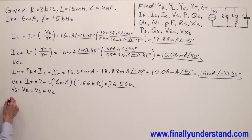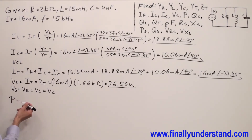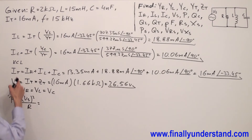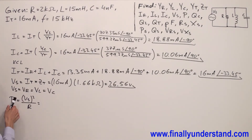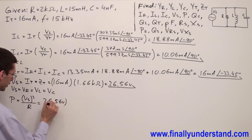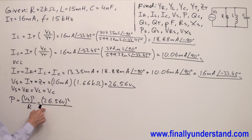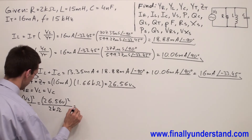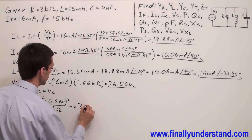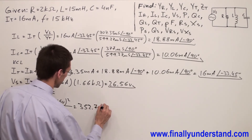Next we're supposed to find the true power. I assume that the given current is RMS, so the voltage I found is also RMS. Power is equal voltage source squared over the resistance. Because we have RMS values, we don't write one half in the formula. So we have 26.56 volts squared over 2 kilo ohms, everything is equal to 352.7 milliwatts. This is the true power in my parallel circuit.